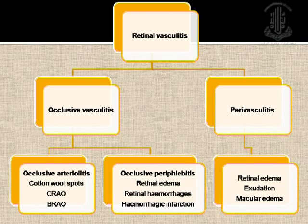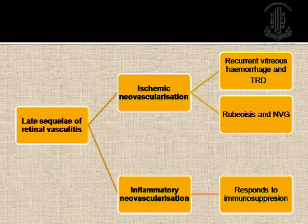Case 3 was a 60-year-old lady presenting with decreased vision in both eyes. The fundus picture showed pockets of subretinal fluid in both eyes with mild disc hyperemia. FFA was again classical — pinhead leaks followed by late pooling of the dye in the subretinal space. Ultrasound demonstrated shifting fluid, confirmed by changing patient position. She had a peripapillary choroidal thickness of 2 mm, confirming the diagnosis of VKH.